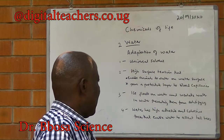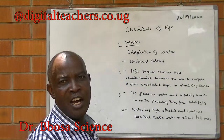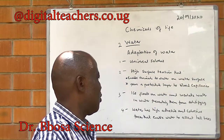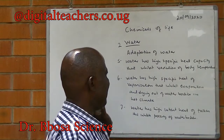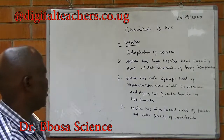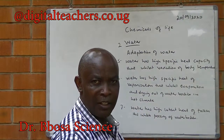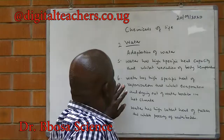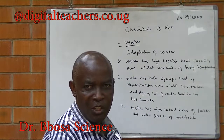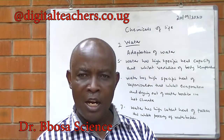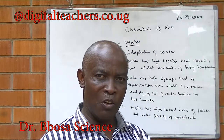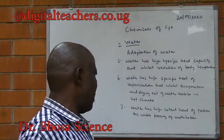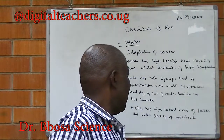Four, water has high adhesive and cohesive forces that enable water to climb up a tall tree in the xylem. Five, water has high specific heat capacity, which inhibits variation of body temperature — you need to lose a lot of heat for the temperature to drop by one degree. Six, it has high specific heat of vaporization, which inhibits evaporation of water and drying out of water bodies during hot climate. Seven, water has high latent heat of fusion, which inhibits freezing of water bodies.